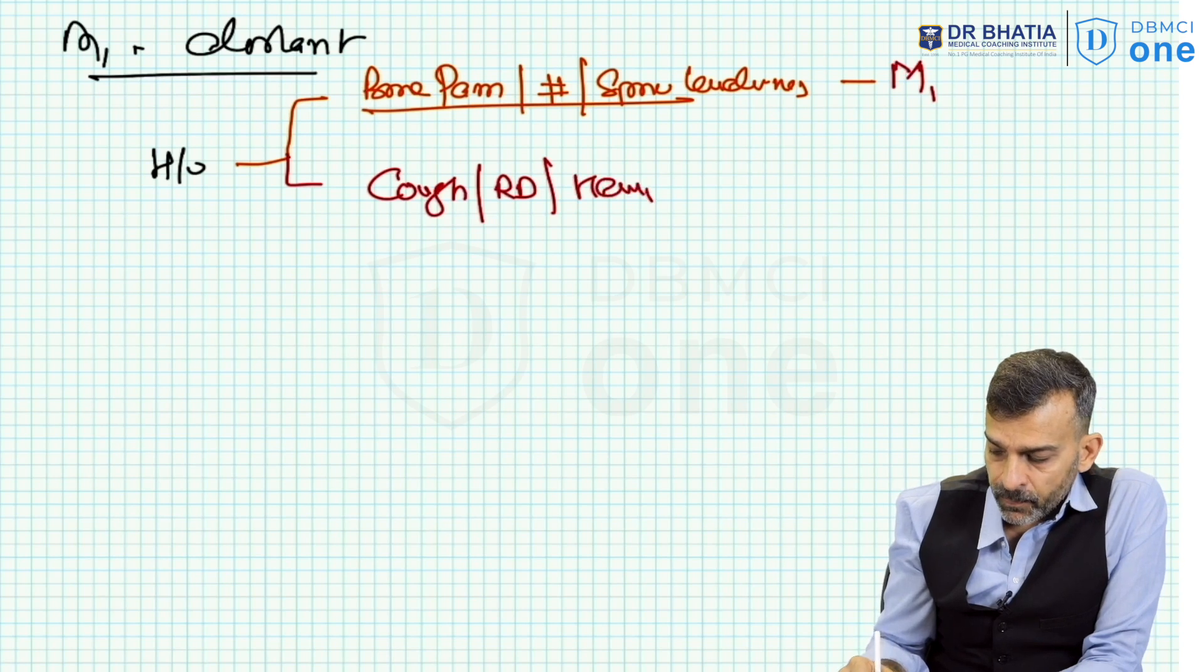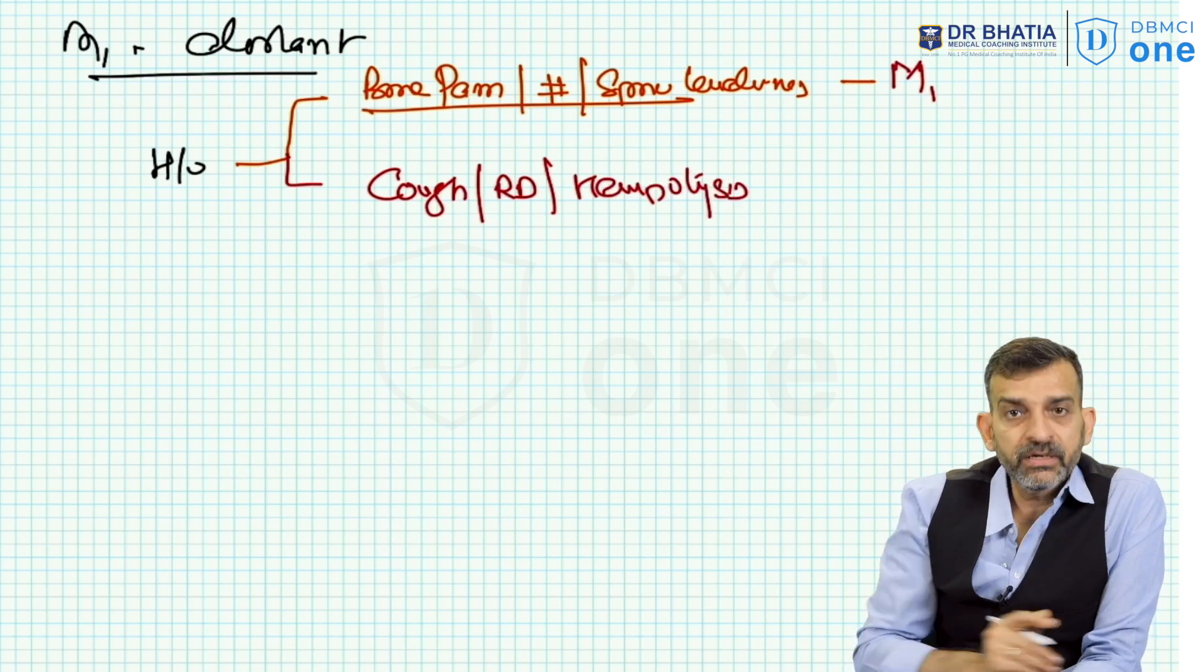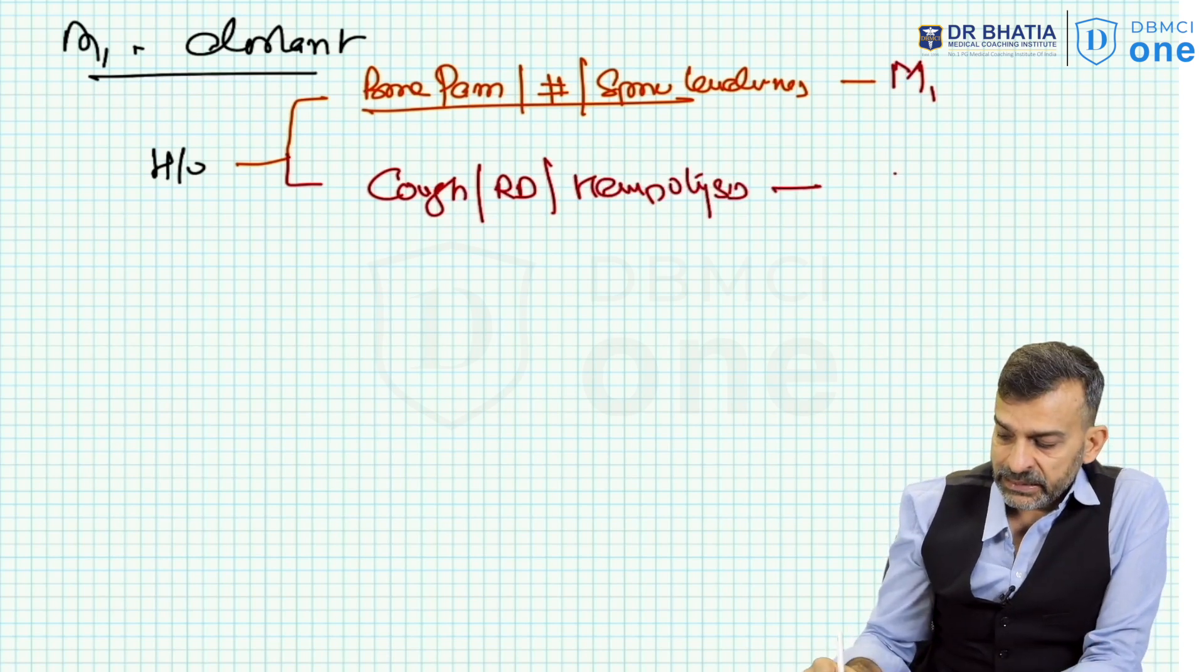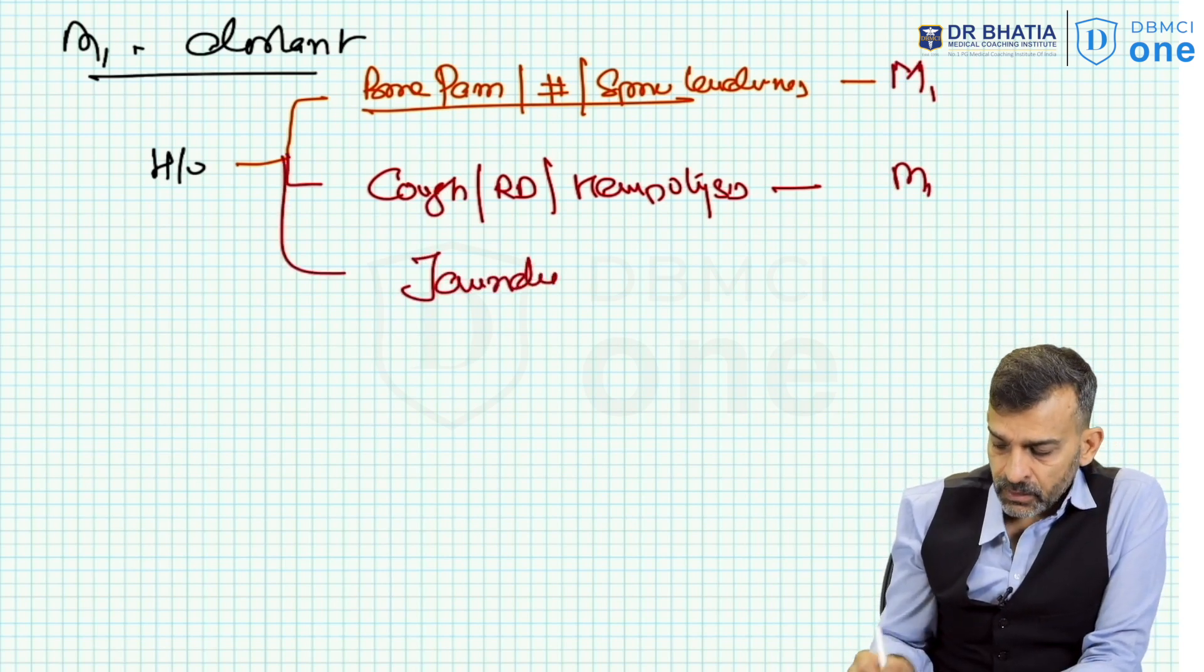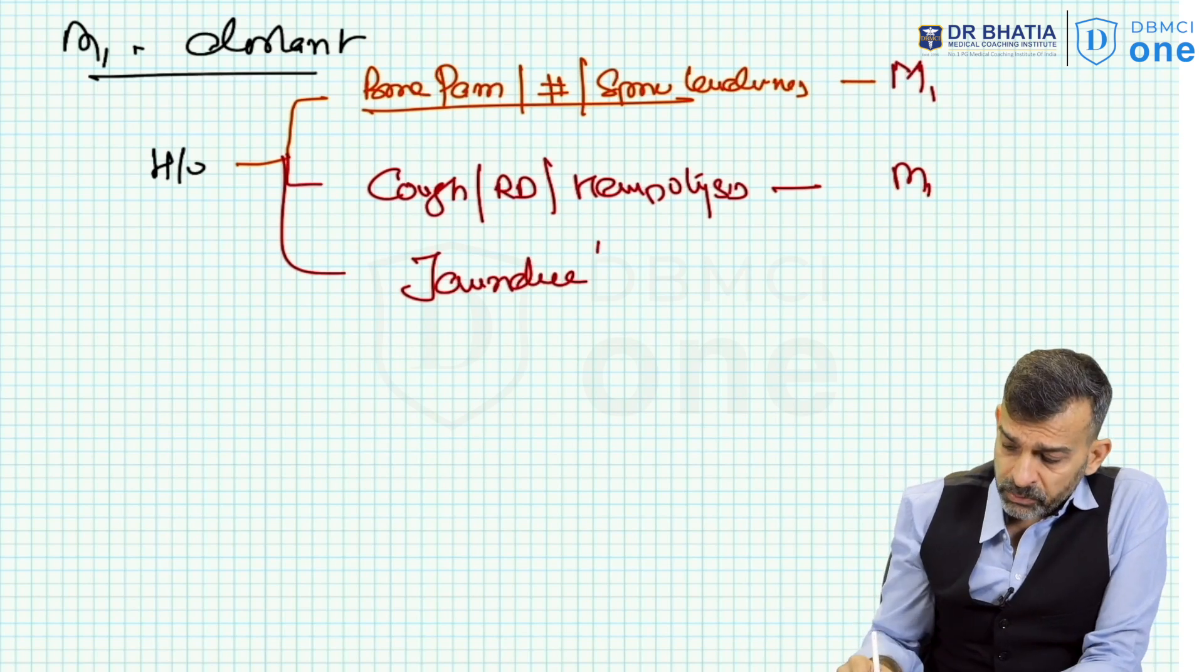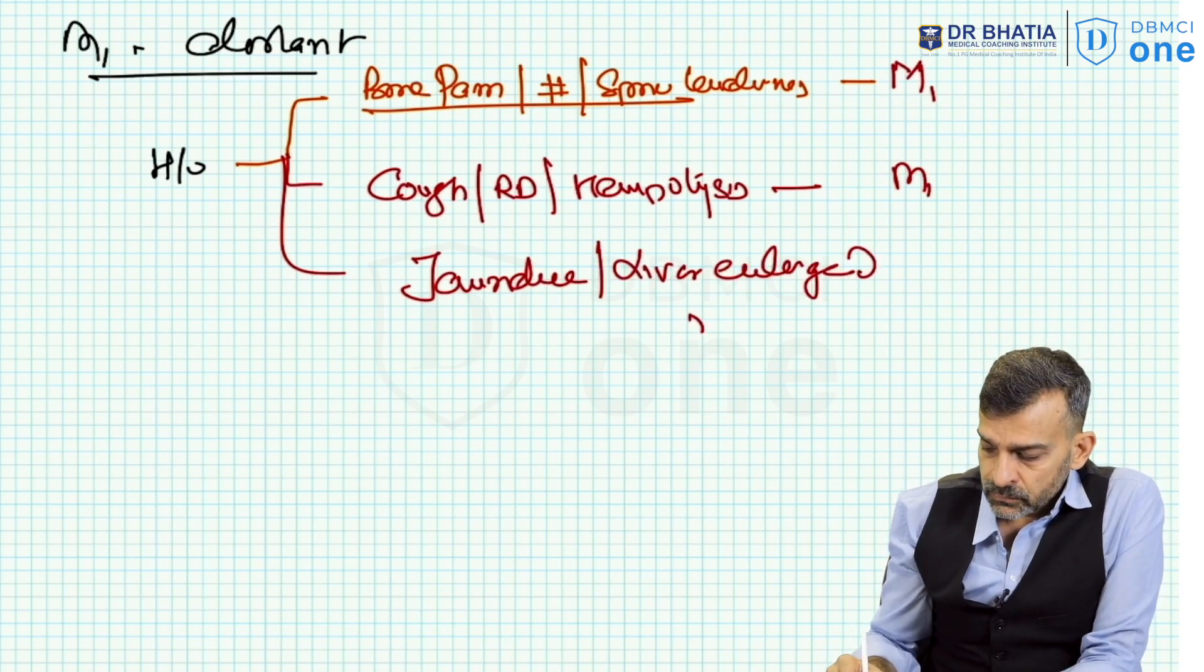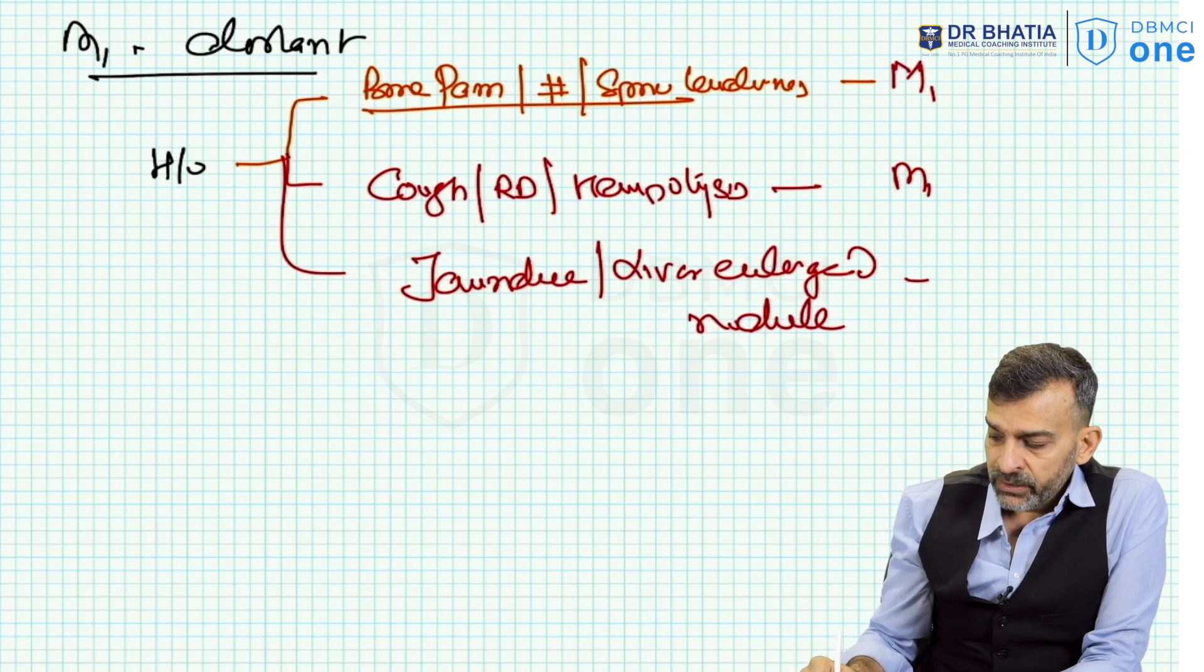Now if the patient has jaundice, or the patient's liver is enlarged, or has a nodule, I will again consider it as M1 disease. So clinically, what I mean to say - which you have to understand in the clinical...